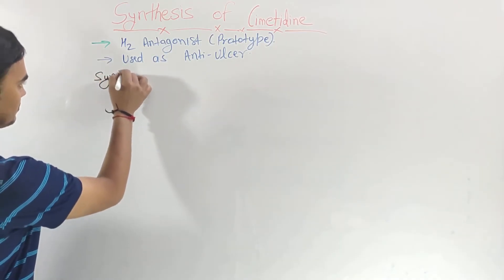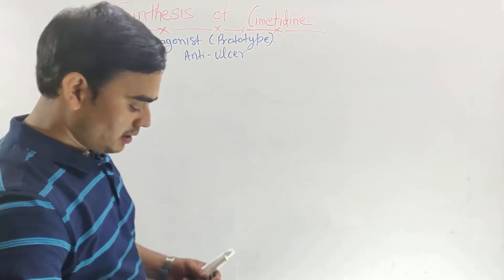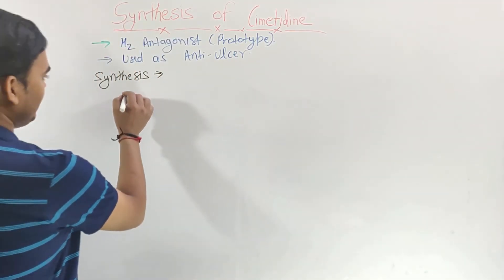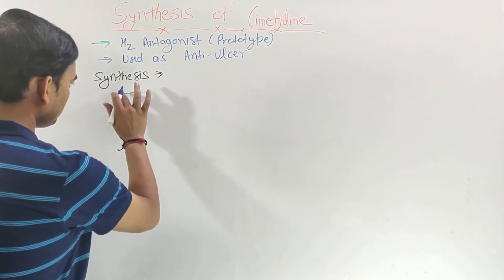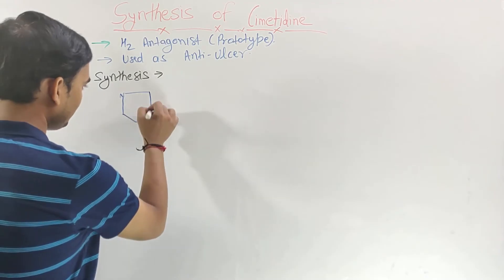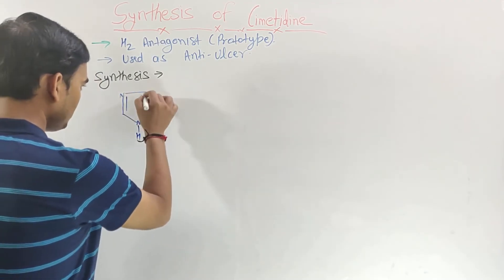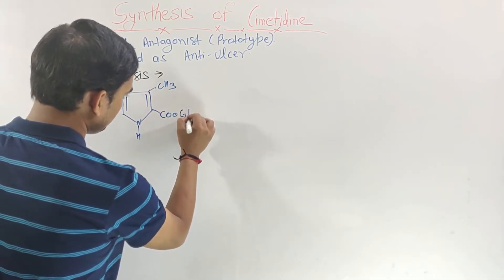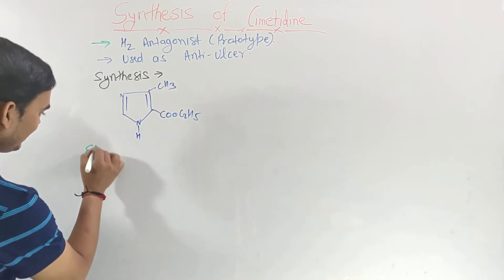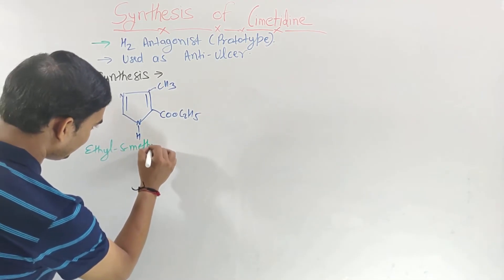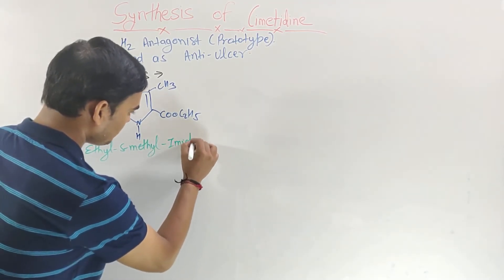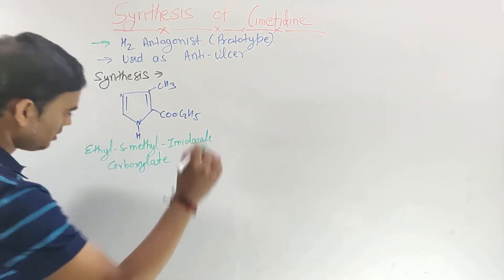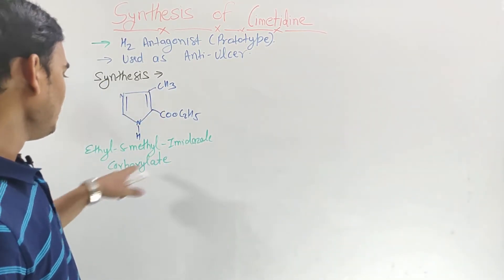Now, the synthesis of Cimetidine. The starting material for the Cimetidine synthesis is imidazole. We draw the structure of the imidazole, which has N, N, and H. Here we have the 5-methyl group and a C double O, C2H5 ester group. This compound is ethyl-5-methyl-imidazole-4-carboxylate.